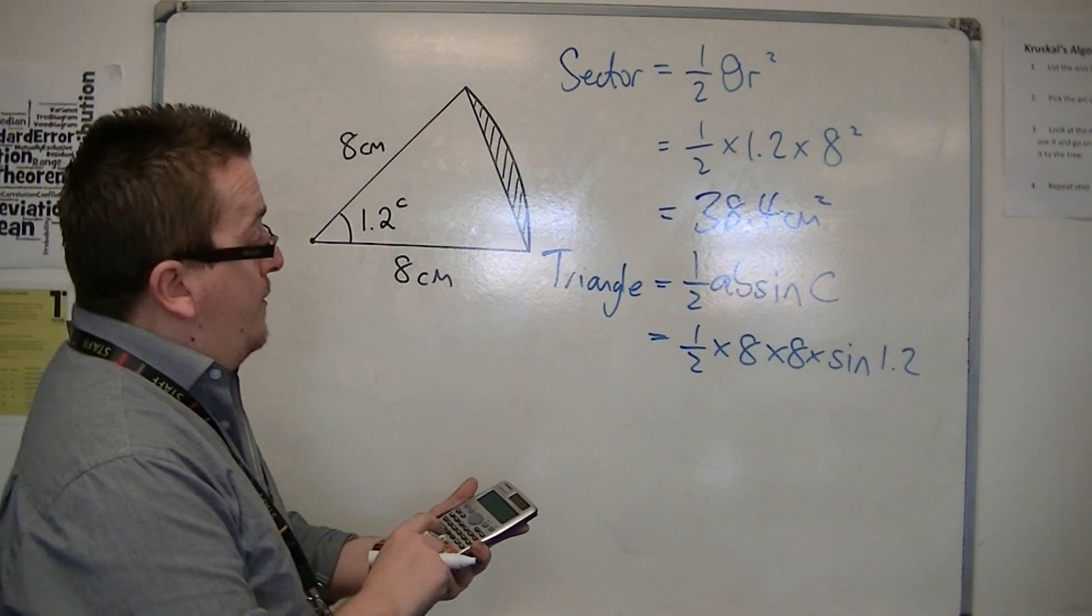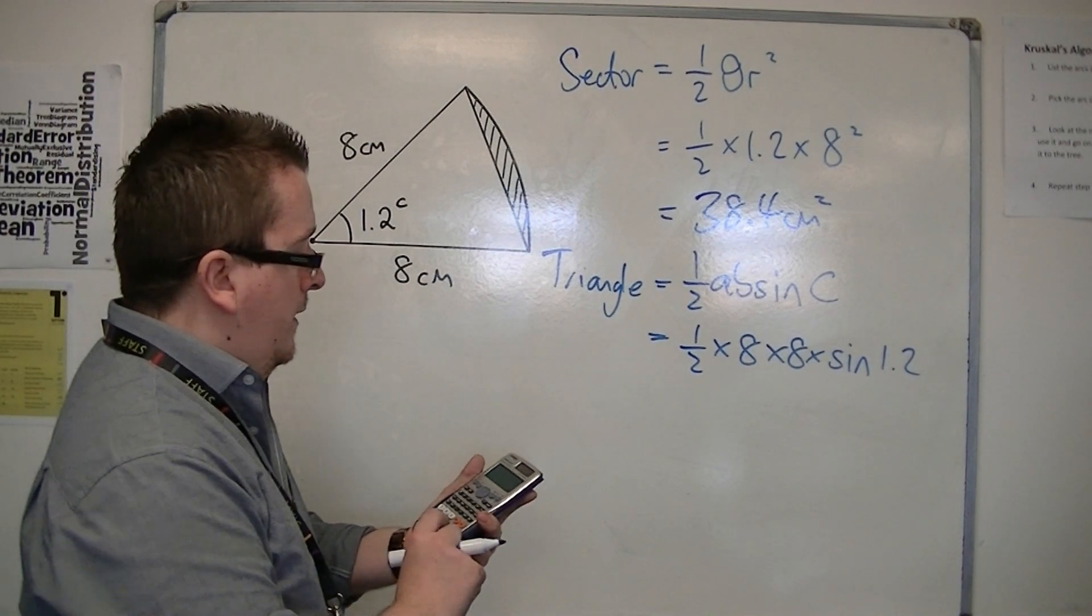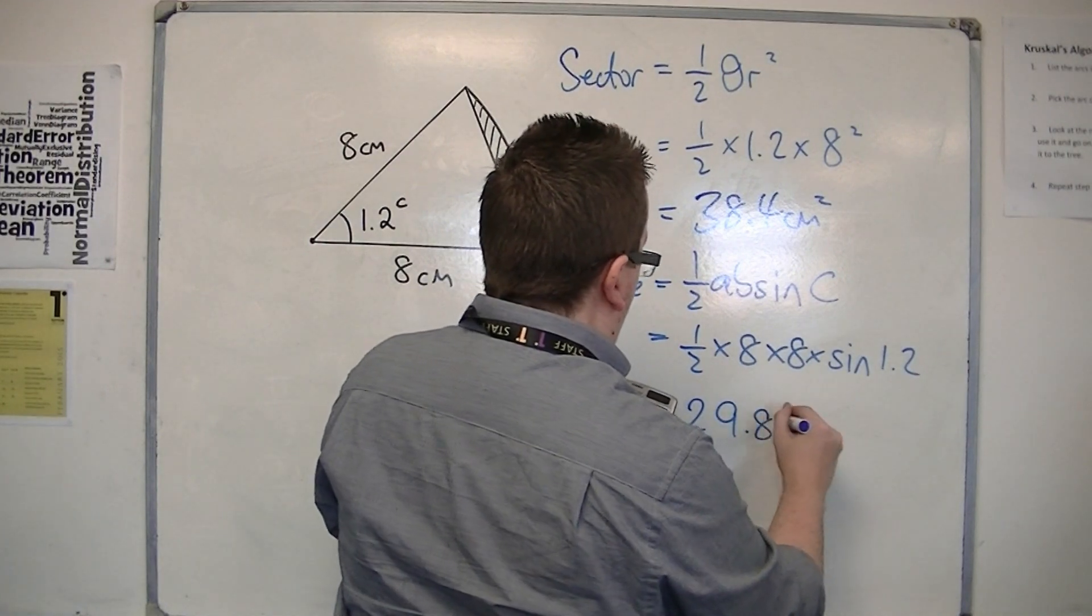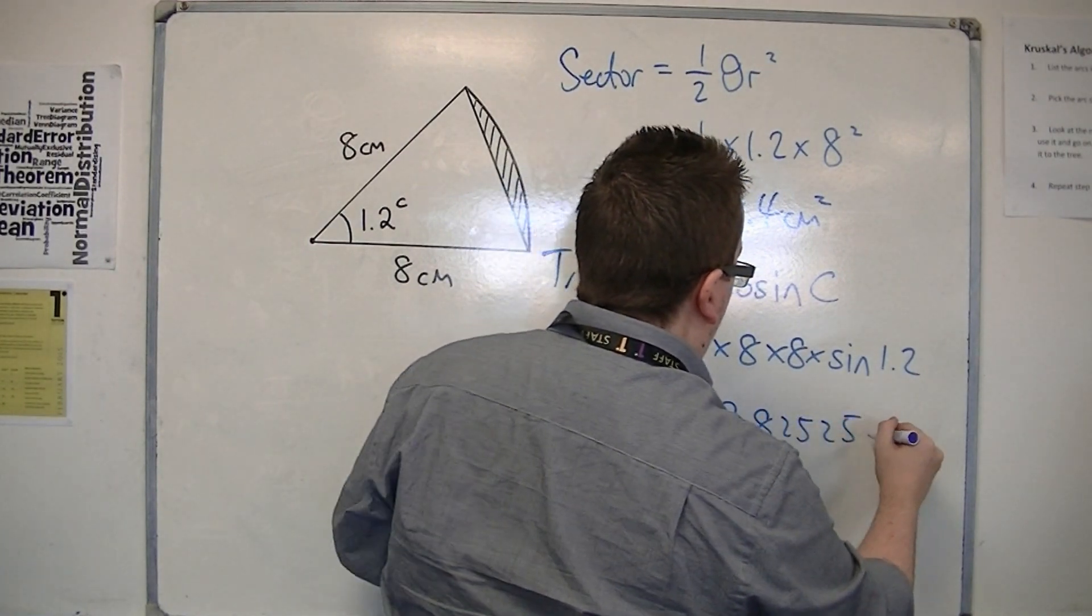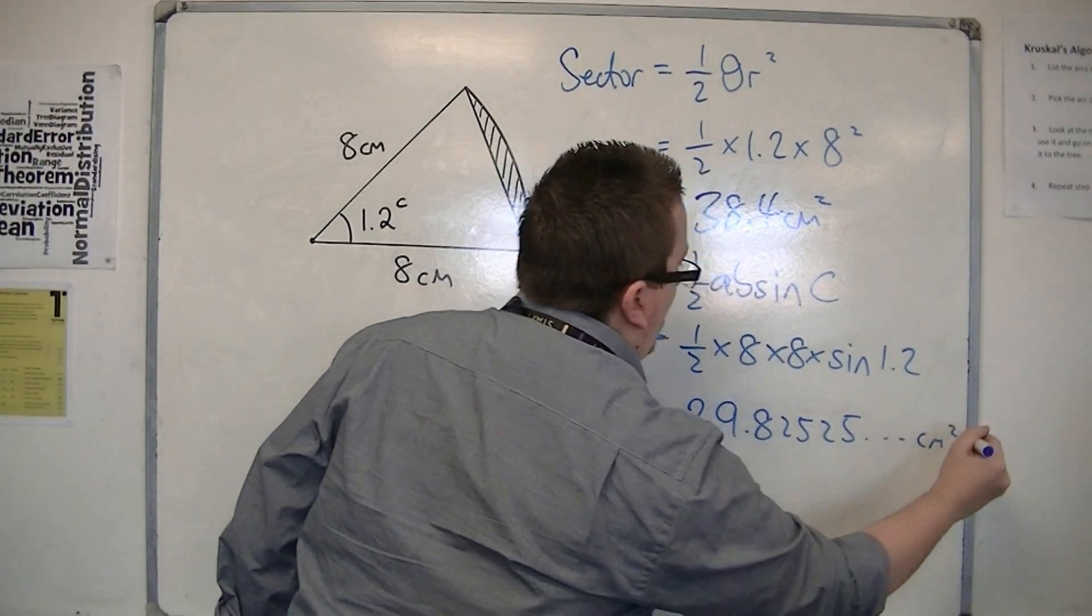So 0.5 times 8 times 8 times sine of 1.2. And we get 29.82525, etc. So that's centimeters squared.